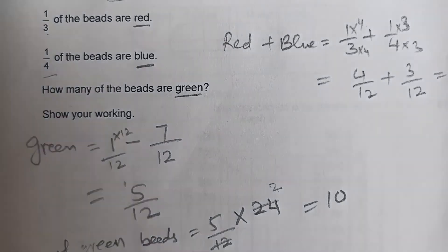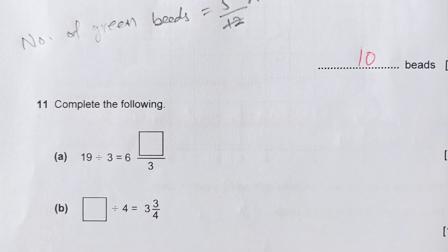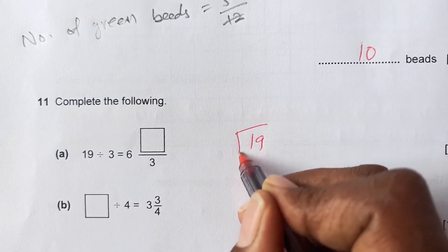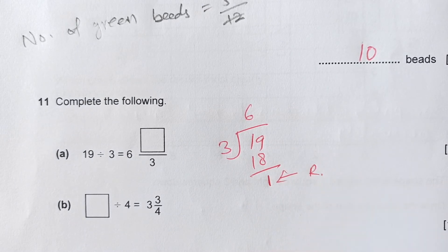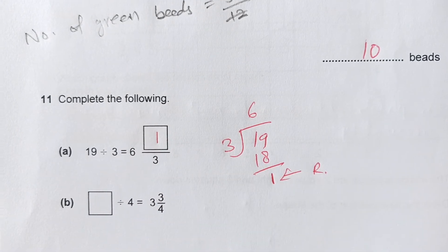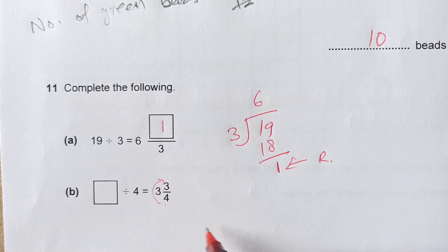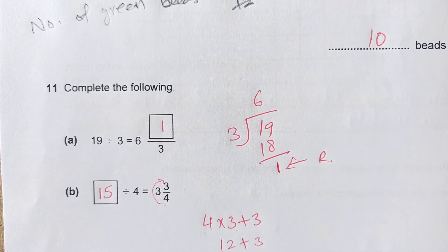Number 11: complete the following calculations. For the first one, dividing by 3: 3 times 6 is 18, with a remainder of 1, so the answer is 6 and 1 over 3. For the next one, it's divided by 4: 4 times 3 is 12, plus 3 is 15, so 15 goes in the box.